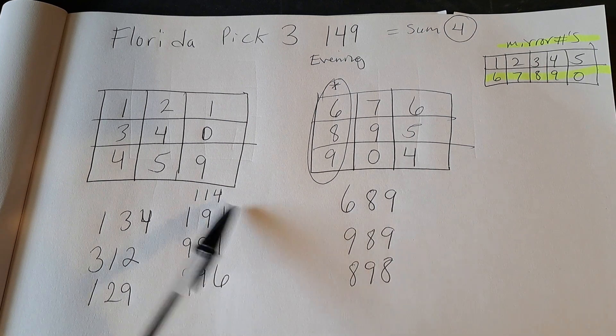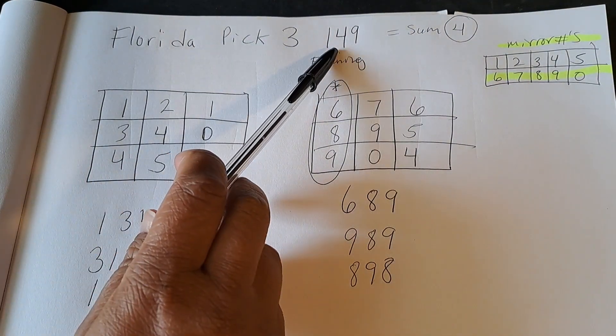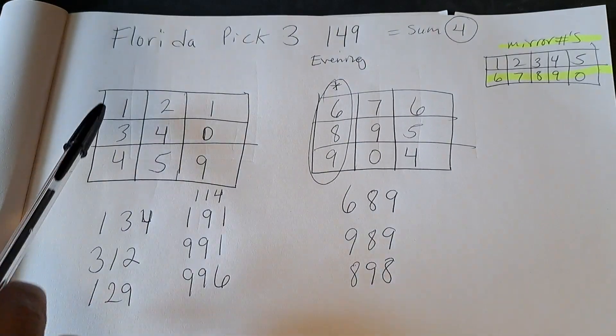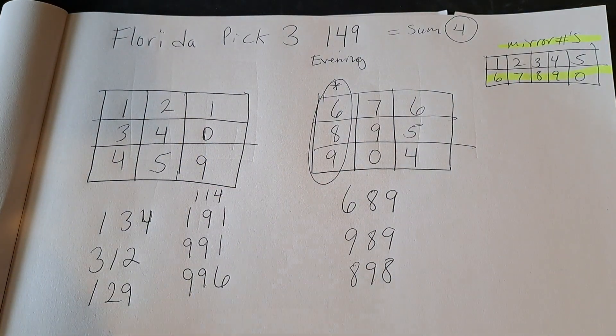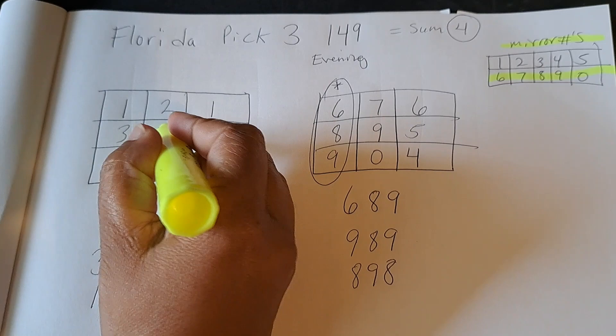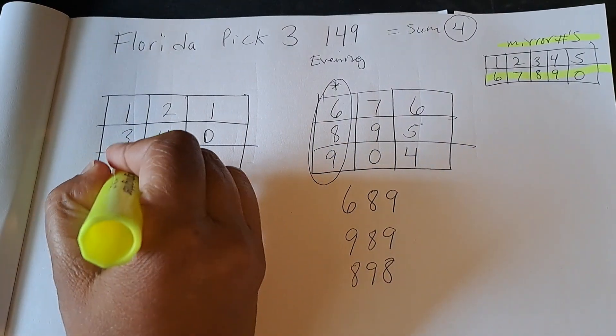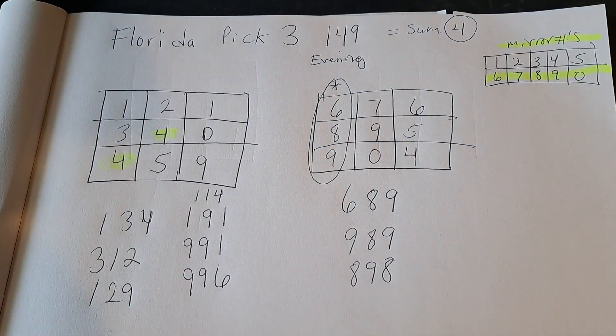Okay guys, so the number that came out was 149. It's a hit sum of four. You have the 149 here. So I'm going to circle the four and look for the numbers around there.